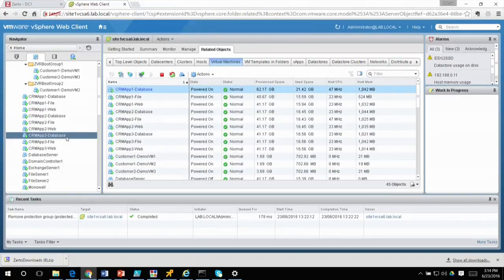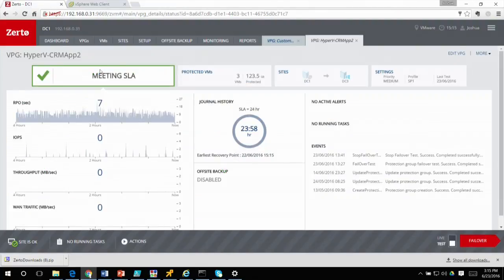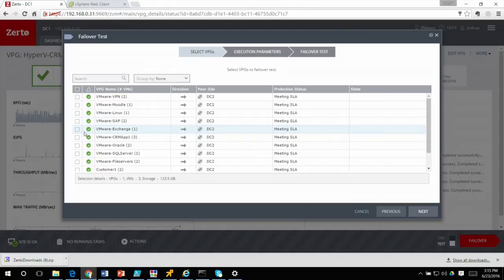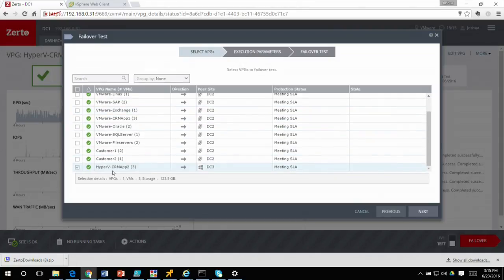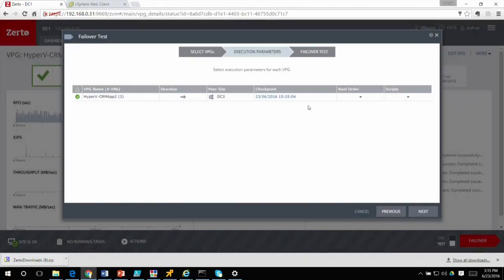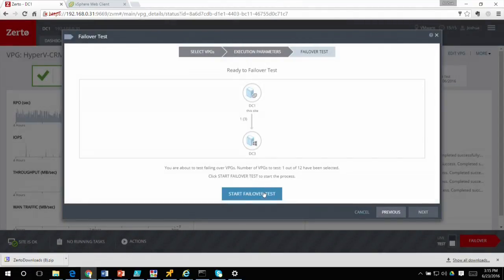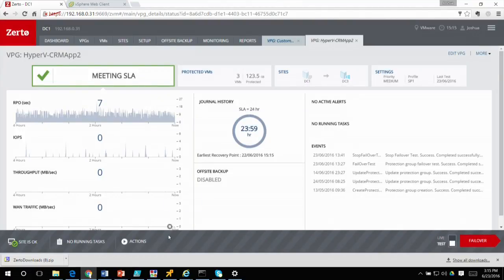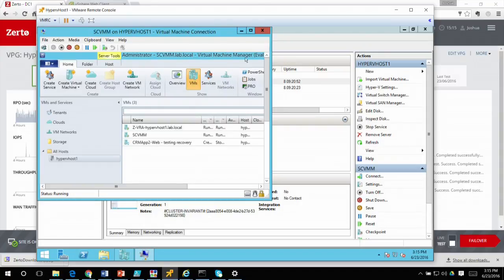It's these three VMs here. In Zerto, in order to test the migration between the hypervisors, we're going to select the Hyper-V protection group, next, next, start failover test. I'm cheating in that I have a nested Hyper-V environment in my VMware lab.